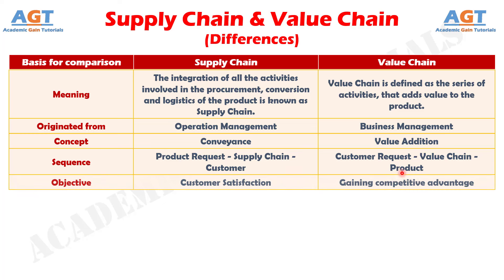And difference number 5: the major objective of the supply chain is to gain complete customer satisfaction, which is not the case of the value chain, which focuses on gaining competitive advantage.